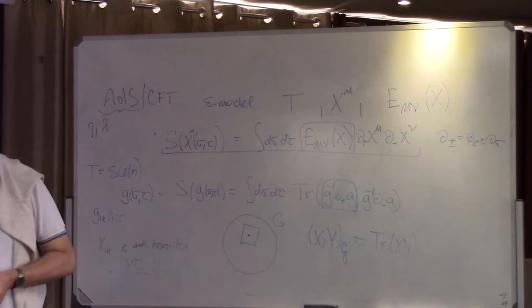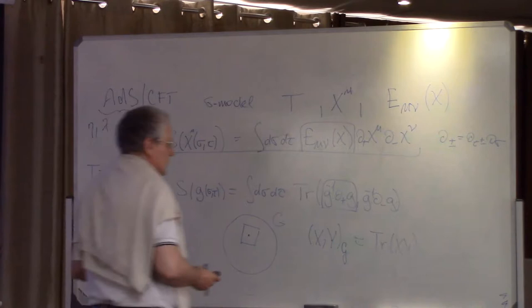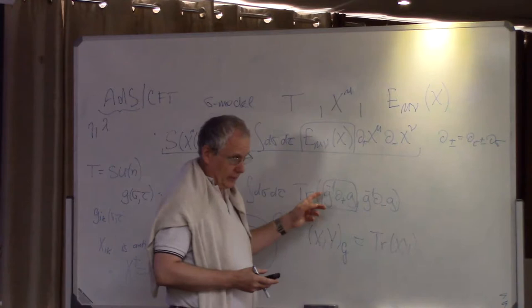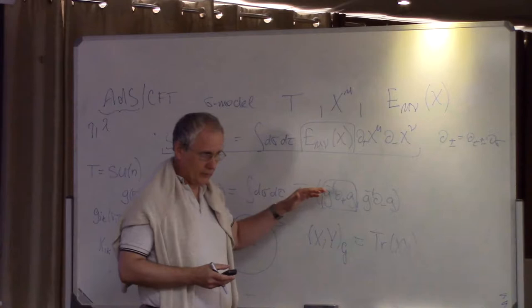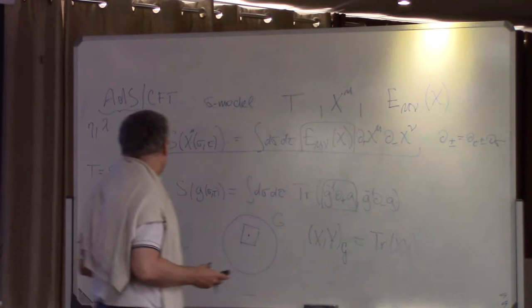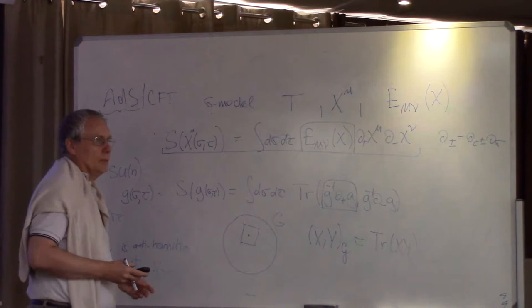Every group manifold has one special point — the unit point — and the tangent space at this unit point has a natural metric given by the Killing-Cartan form from the Lie algebra. This metric can be transported to every point in the group by left or right group action, since the metric is bi-invariant. People do not study this model in bosonic string theory because it develops a conformal anomaly, which is cured by the Wess-Zumino-Witten term. However, for supergroups appearing in ADS-CFT, one may not need that term.